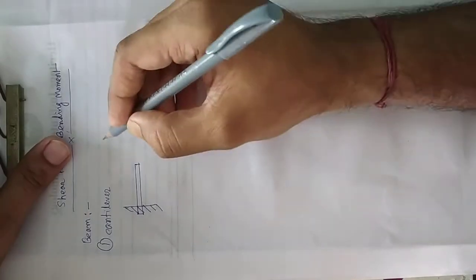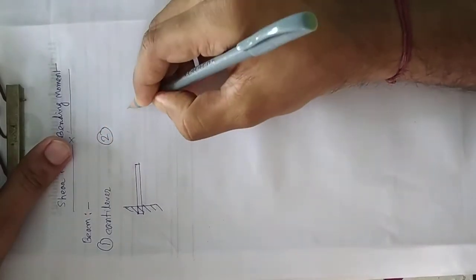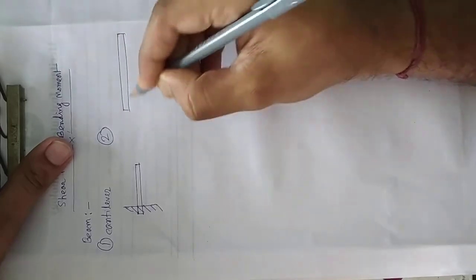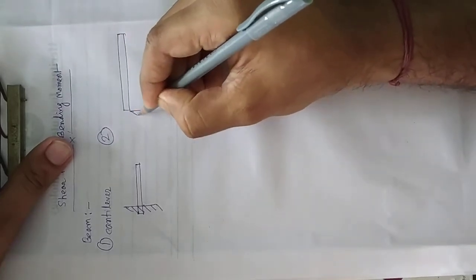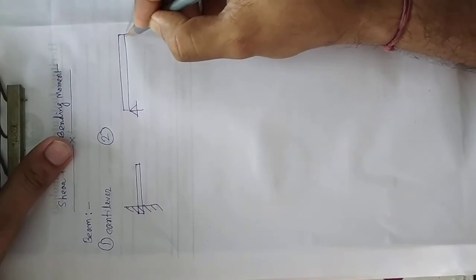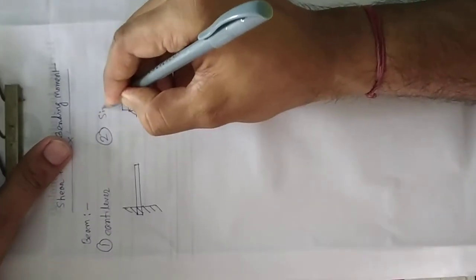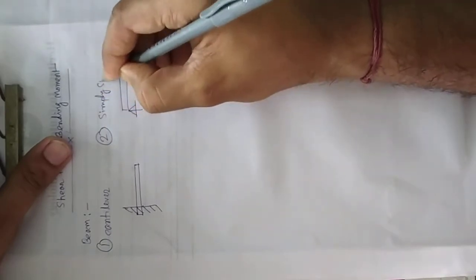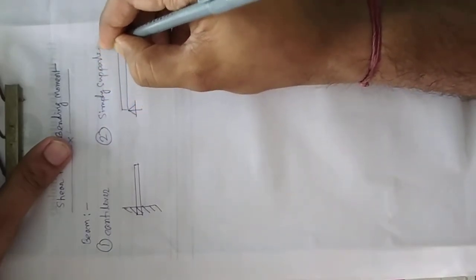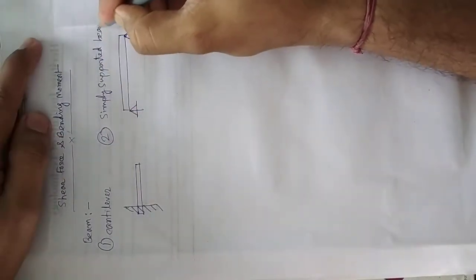Number two, simply supported beam. The two sides are resting on the supports. This is called simply supported beam.